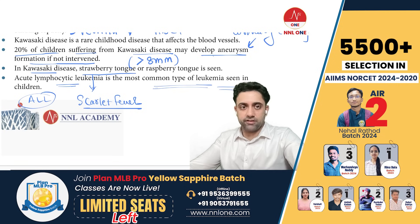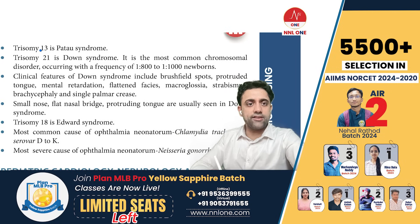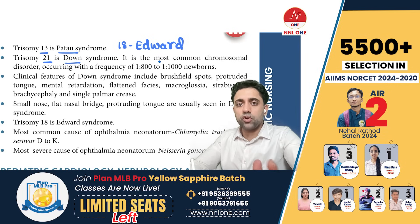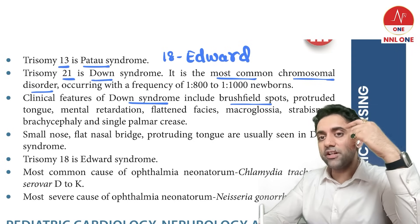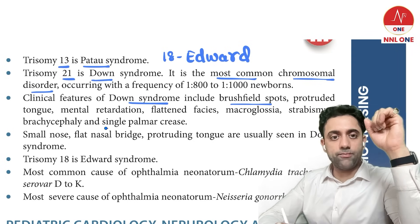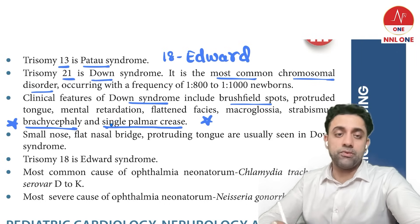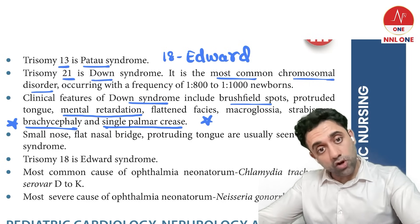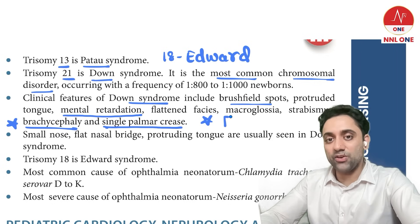Regarding trisomies: trisomy 13 is Patau syndrome, trisomy 21 is Down syndrome, and trisomy 18 is Edward syndrome. Down syndrome is the most common trisomy and the most common chromosomal disorder. In Down syndrome, the patient has Brushfield spots in the iris, single palmar crease, and brachycephaly. It is also the most common non-preventable cause of intellectual disability, followed by Fragile X syndrome.